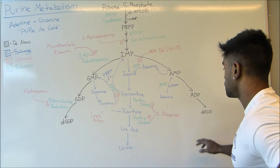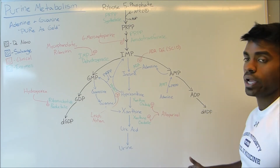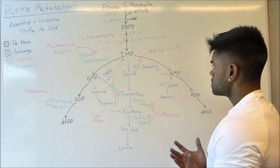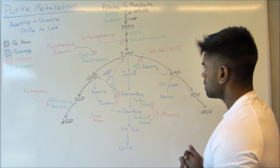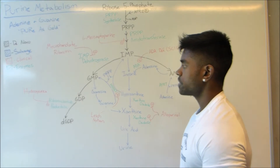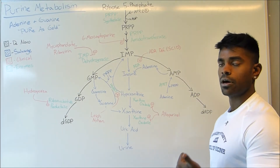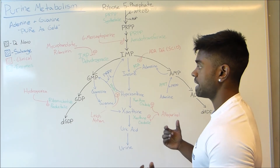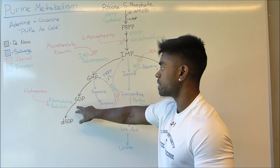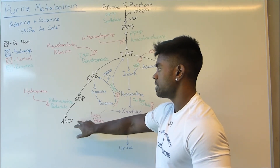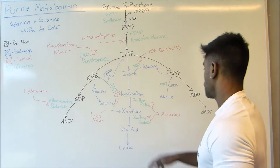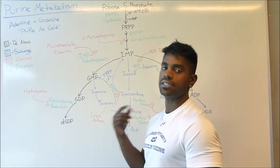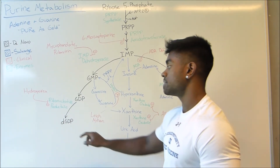With ADA deficiency, you're going to have an accumulation of dADP, which is quite damaging especially for the white blood cells. Next, hydroxyurea — if we remember back to the pyrimidine synthesis video, it's pretty much going to inhibit ribonucleotide reductase. So dGDP is not going to be able to be formed here, but as you can see, this will not play a role in the synthesis of RNA molecules — only DNA molecules.